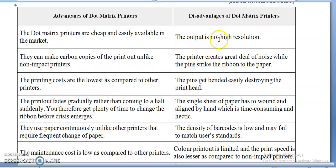However, dot matrix printers have disadvantages. The output resolution is not high and mostly it prints only in black and white. The printer creates a great deal of noise because the pins physically strike the ribbon and paper — this is why it is categorized as an impact printer. The pins can also bend easily, destroying the print head due to continuous contact with the ribbon and paper.